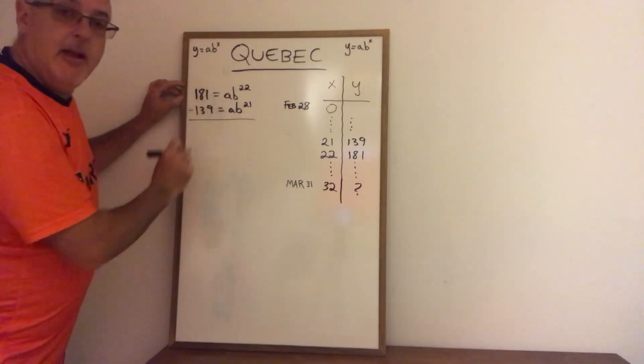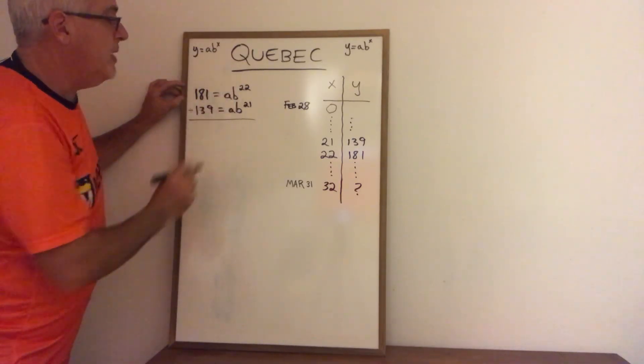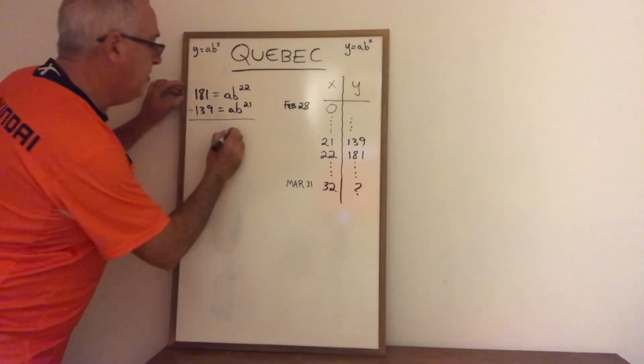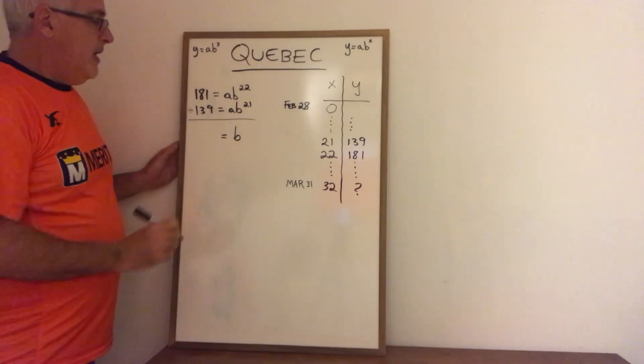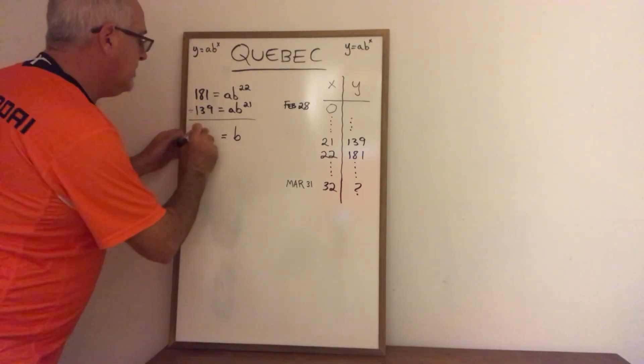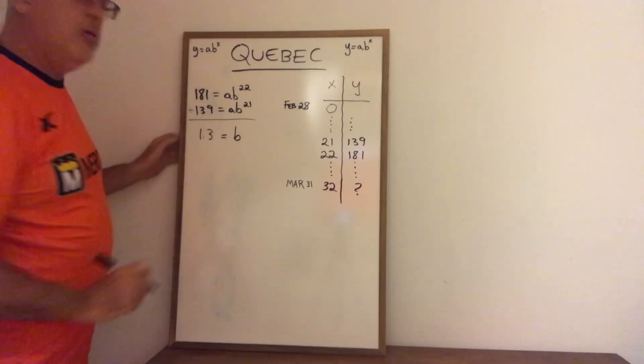When I divide the a and the a cancel and b to the 22 divided by b to the 21 is b. Then I divide 181 by 139 and I get an answer that rounds to 1.3.